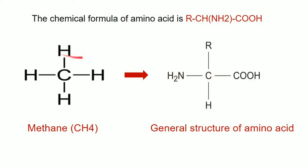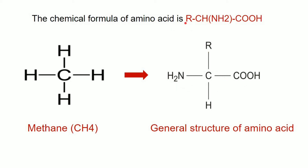The R group is the same — it is a functional group. In the R group, one amino acid is distinguished. Like glycine is a type of amino acid — it depends on this R group. The total amino acid structure is the same. There is one amino group, one carboxyl group, one hydrogen, and the R group. The R group is what changes. You can cook this simple formula: it is R — CH — NH2 — COOH.